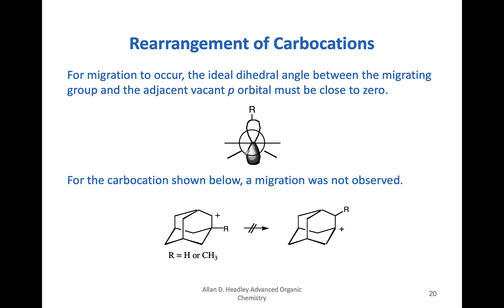In terms of migration, the ideal dihedral angle for bond migration is close to zero. The migrating group R is directly behind the vacant p orbital of the carbocation, making it much easier for those electrons to migrate directly into the p orbital from behind. If the dihedral angle is not favored, migration will not occur. Additionally, the geometry at a bridgehead does not favor the sp2 hybridization required for a carbocation, which is another reason migration doesn't occur at bridgeheads.